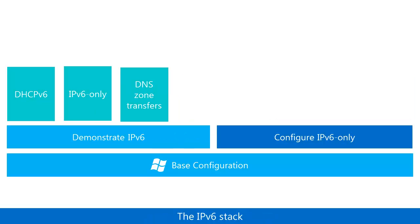The Internet Protocol Version 6, or IPv6, stack is another example. This stack uses the IPv4-only Base Configuration Test Lab environment and steps you through IPv6 functionality on an intranet and a simulated internet.